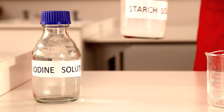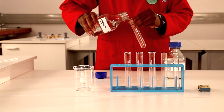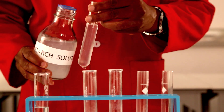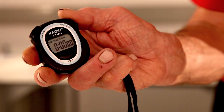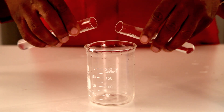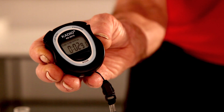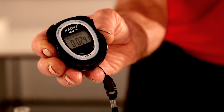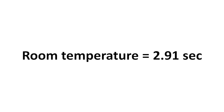Pour 10 cm³ of iodine solution and starch solution at room temperature into separate test tubes. Before pouring the contents of the test tubes, make sure the stopwatch is at zero. Pour the contents of both test tubes into a 250 cm³ beaker. Measure the time of the reaction with a stopwatch. The reaction time was 2.9 seconds.